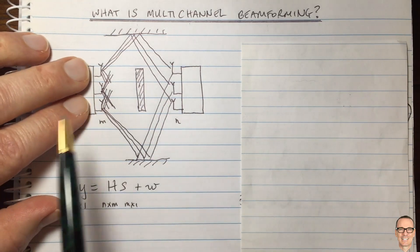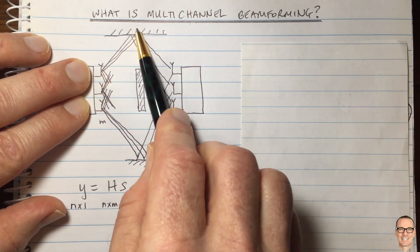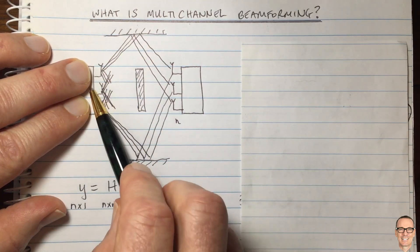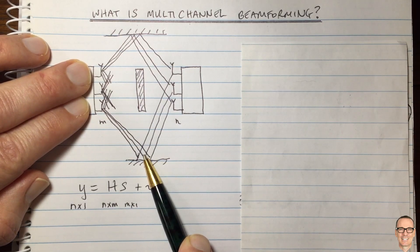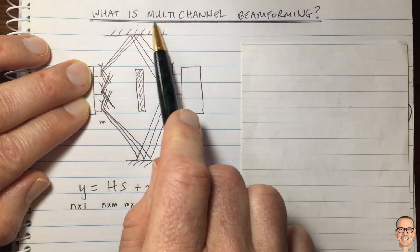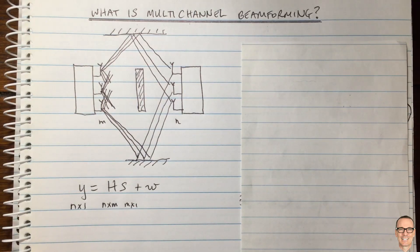But now we have a choice. We can put beamforming in one direction and we could also do beamforming in the other direction at the same time in the same frequency band. That's what we call multi-channel beamforming. So let's look at how we do that.